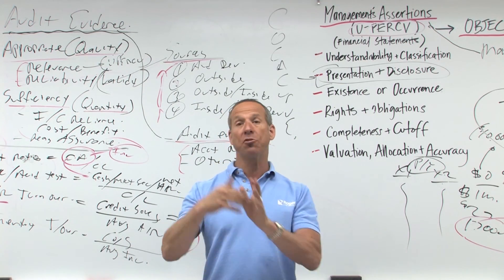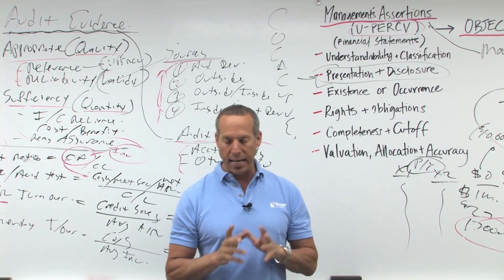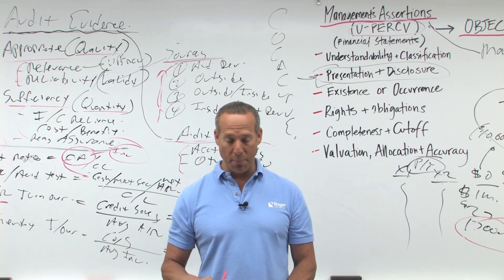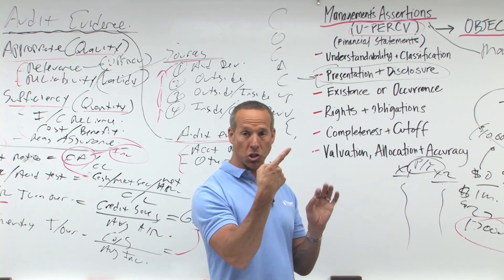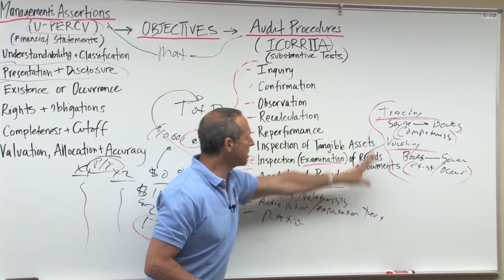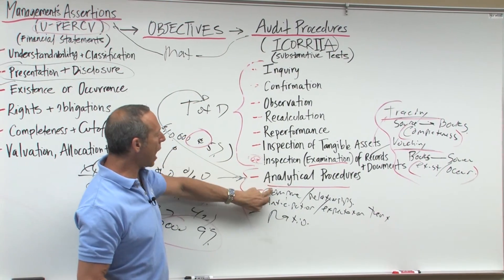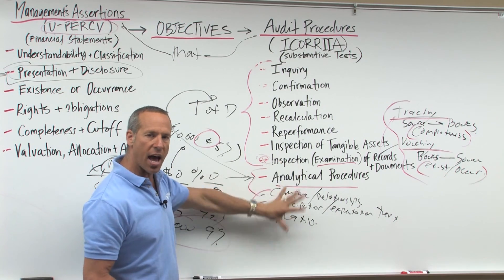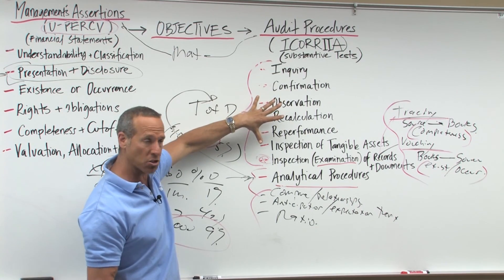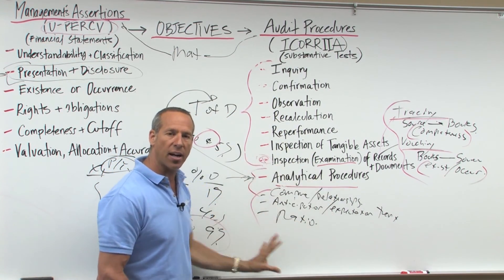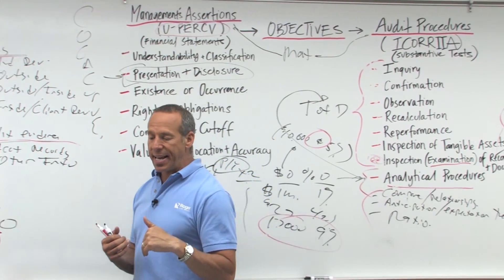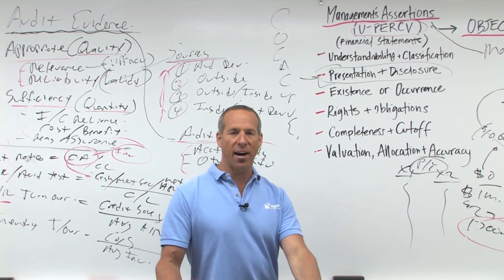Book value per common is calculated after the preferred stockholders get paid out. We'll discuss that more in the financial accounting exam. Now, analytical procedures — what does that mean? These are audit procedures, substantive tests. We've talked about ICORIA, and the A stands for analytical procedures — study of data comparisons and relationships. This is one of your different tests, along with test of details of accounts, transactions, balances, and disclosures. It's important that you understand all of these and see how they all tie together.